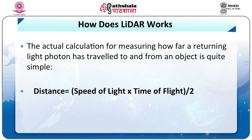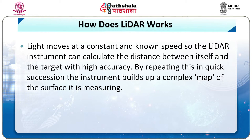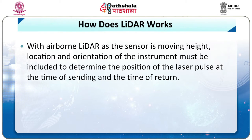As given in the equation below, the LIDAR instrument fires rapid pulses of laser light at a surface — some up to 150,000 pulses per second. A sensor on the instrument measures the amount of time it takes for each pulse to bounce back. Light moves at a constant and known speed, so the LIDAR instrument can calculate the distance between itself and the target with high accuracy. By repeating this in quick succession, the instrument builds a complete map of the surfaces it is measuring. With airborne LIDAR, other data must be collected to ensure accuracy. As the sensor is moving at height, the location and orientation of the instrument must be included to determine the position of the laser pulse at the time of sending and returning. This extra information is crucial to the data's integrity.